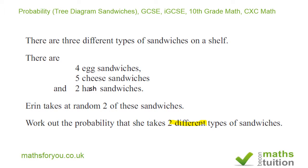We are told that there are three different types of sandwiches: egg sandwiches, cheese sandwiches, and hash sandwiches. Erin takes at random two of these sandwiches, and the question asks us to work out the probability that she takes two different types of sandwiches. So the operative word here is 'different type of sandwiches.'